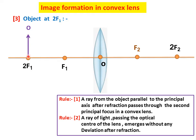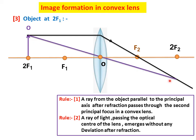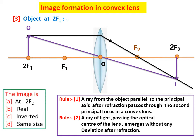The third situation is when the object is at 2F1. Using rules 1 and 2: a ray parallel to the principal axis after refraction passes through the second principal focus, and a ray through the optical center emerges without any deviation. We get image I at 2F2, which is real, inverted, and the same size as the object.